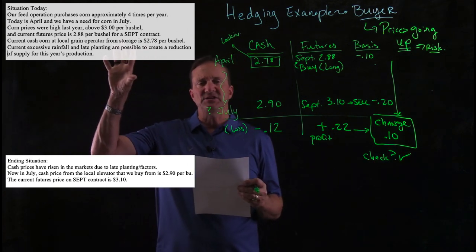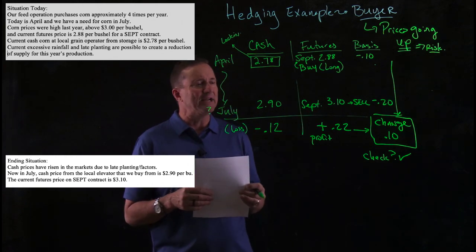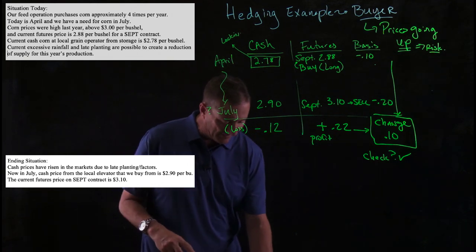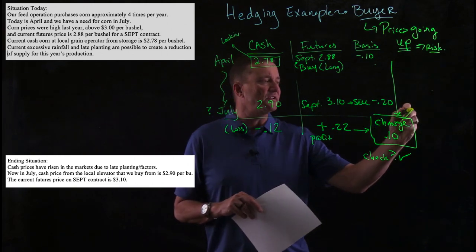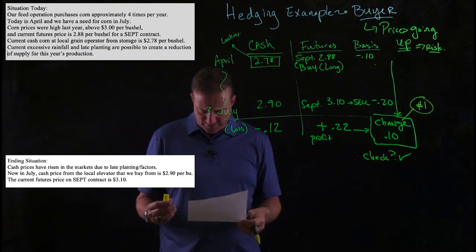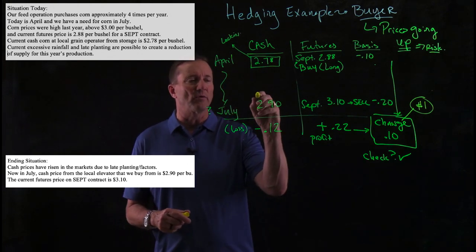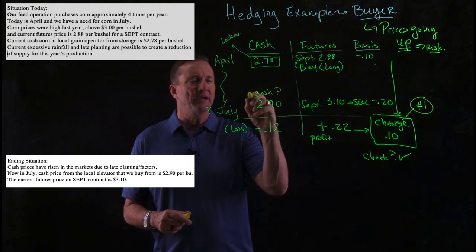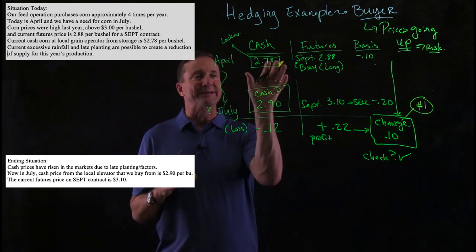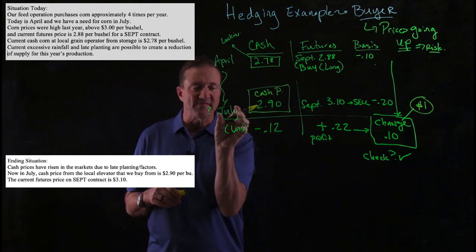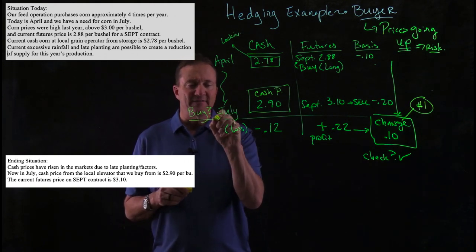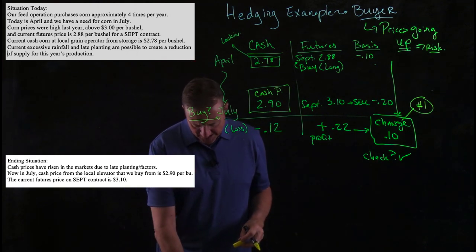That's the beginning situation and the ending situation — here's how you put it in a table. Common questions from this type of problem: the first is, what is the change in basis? The answer is $0.10. The next question is, what is the cash price paid for corn? The cash price paid is $2.90. Don't get confused — we had $2.78 in the beginning, but that was before we needed the corn. We actually bought the corn in July at $2.90, and that's what we paid.